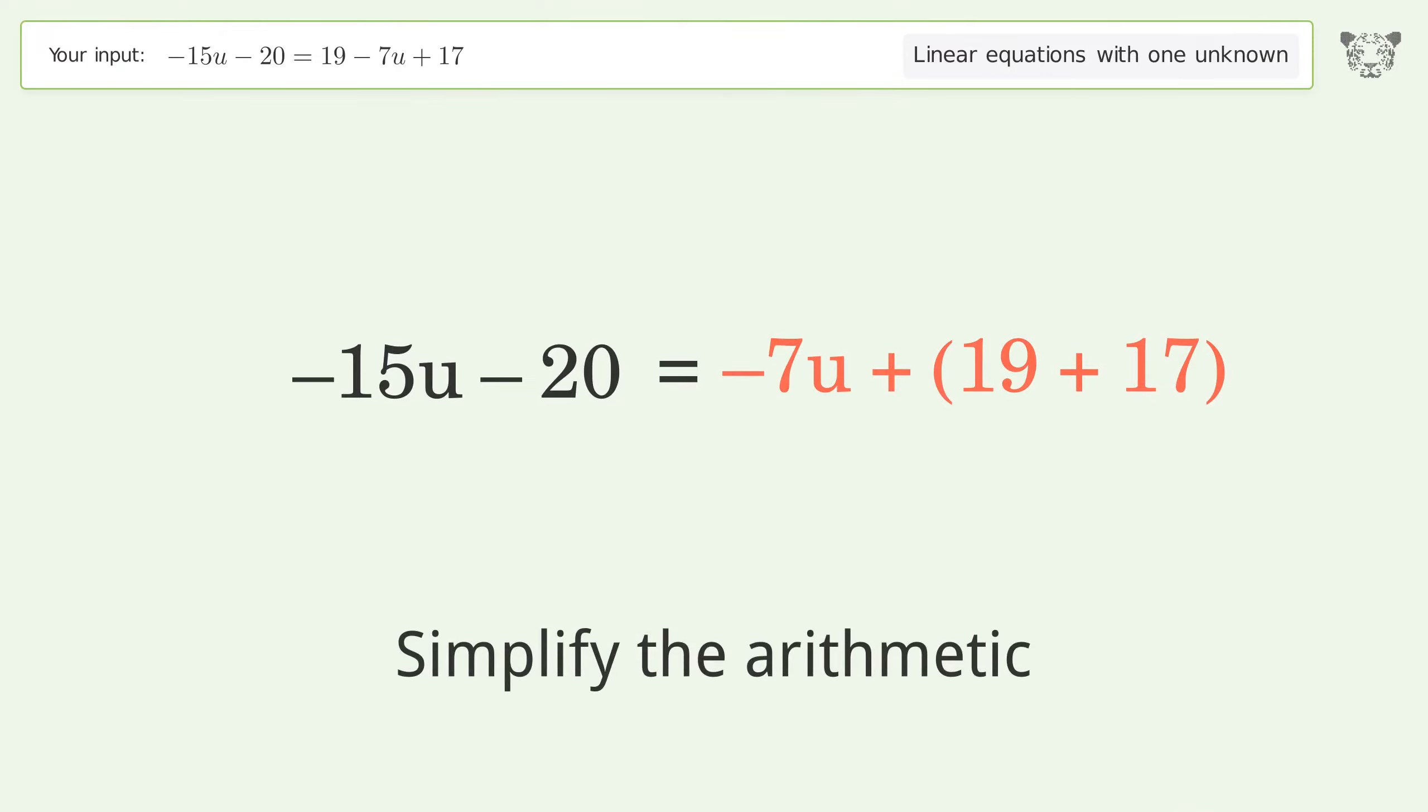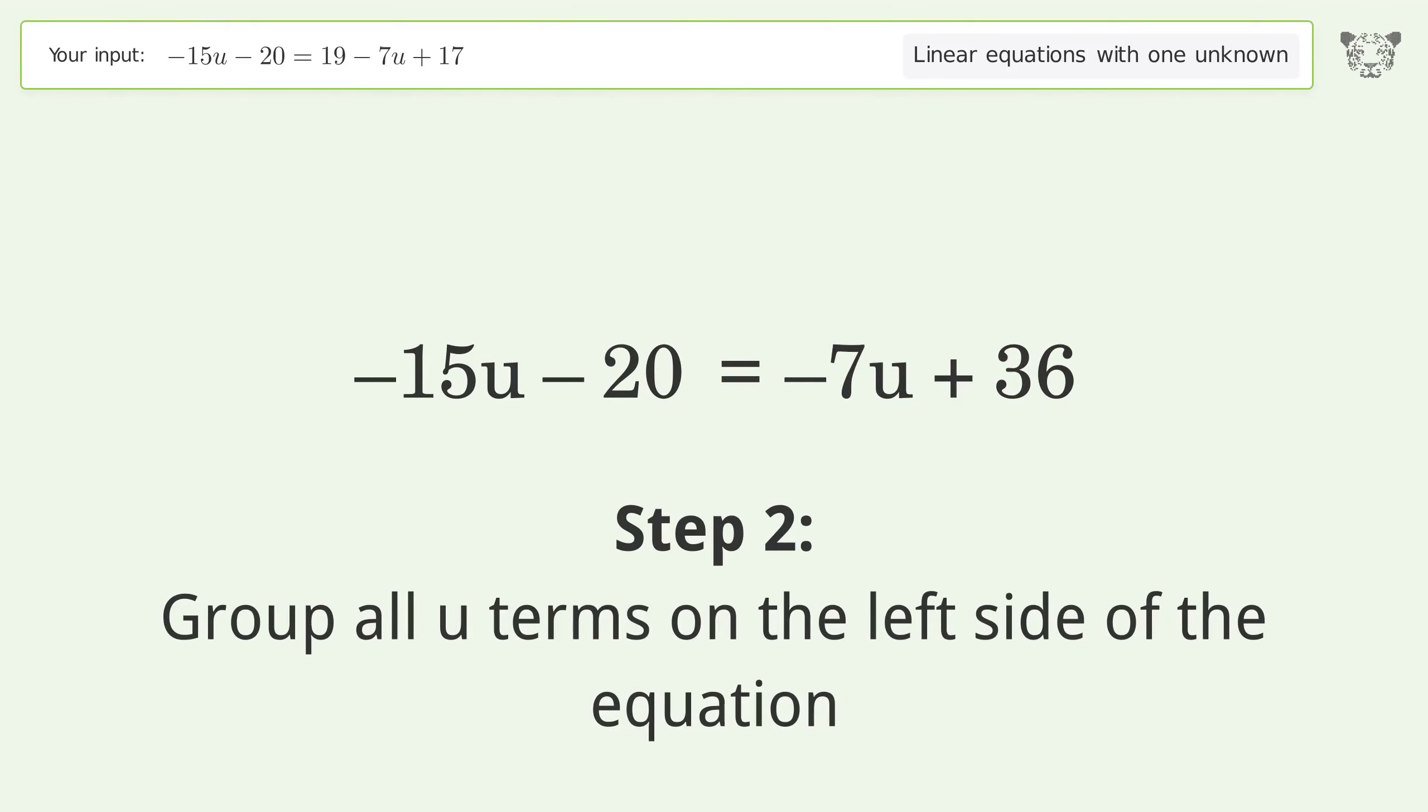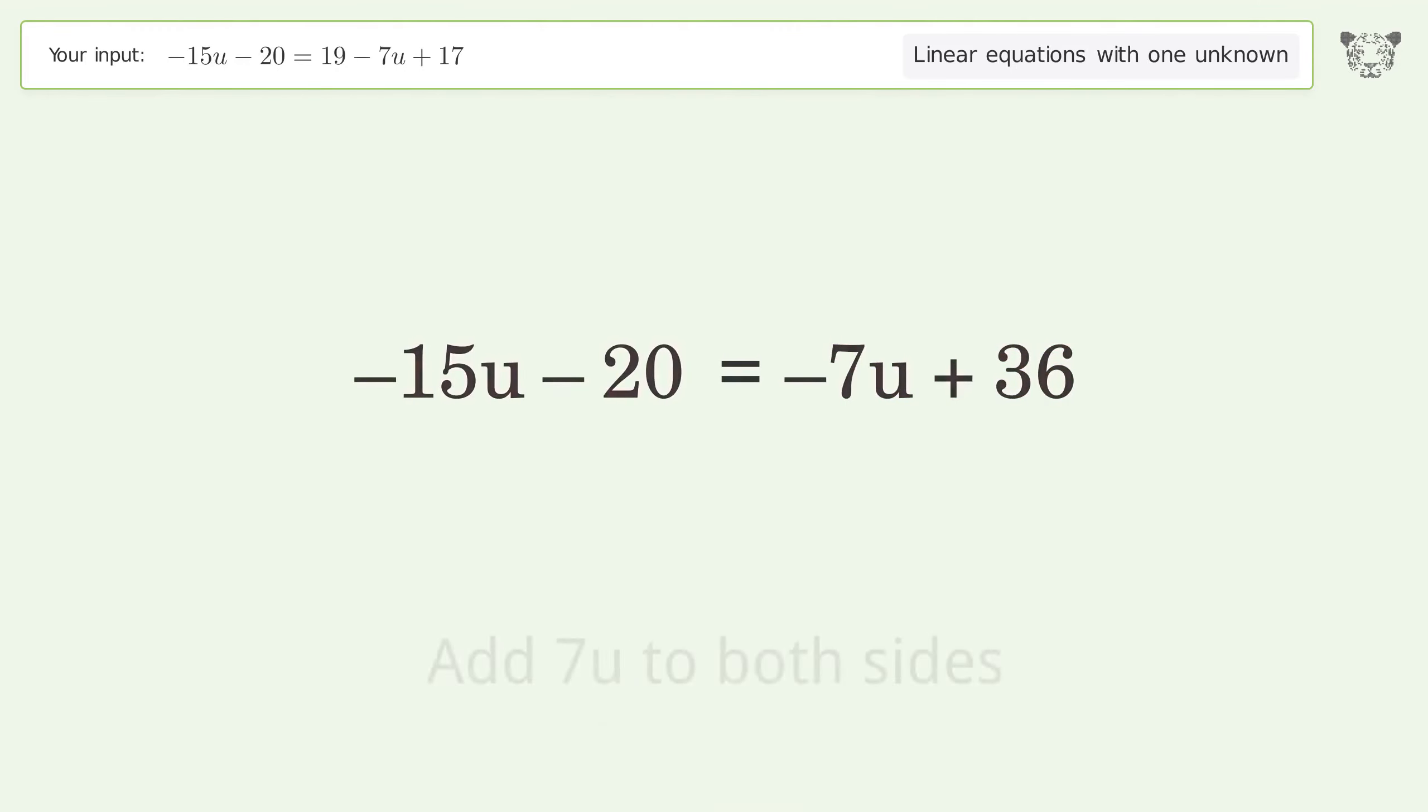Group like terms. Simplify the arithmetic. Group all u terms on the left side of the equation. Add 7u to both sides.